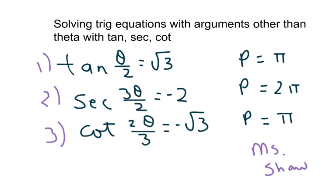One thing you need to recall is the period for tan and cotan is pi. All the other trig functions, the period is 2 pi. So that's going to affect how we add our rotations.